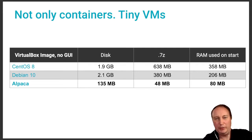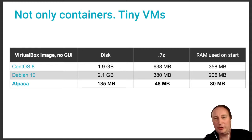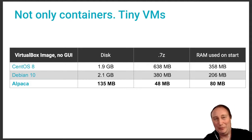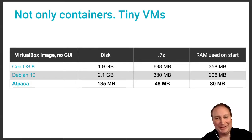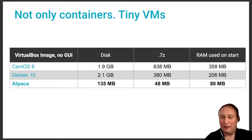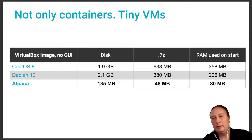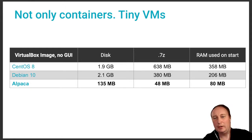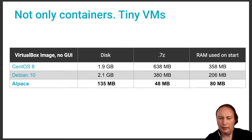This applies not only to container images but also to classical virtual machines. Alpaca VM images can be very small — you can actually send a ready-made image via email if you have a 50 megabyte limit; you can compress it and just send it. After startup, Alpaca consumes very little operating memory — much less than some other operating systems, less than 100 megabytes, which is really small.